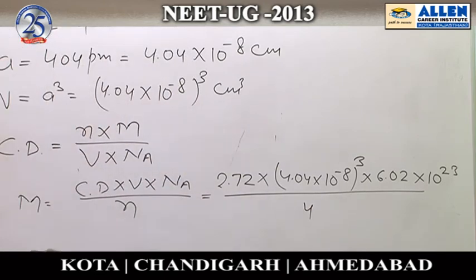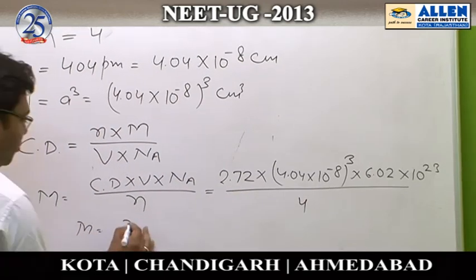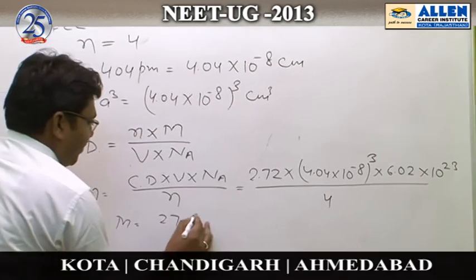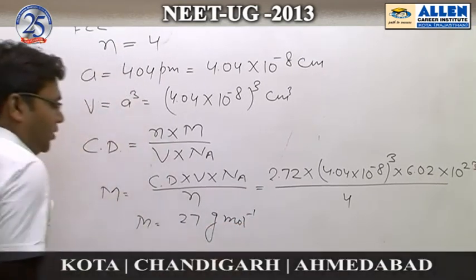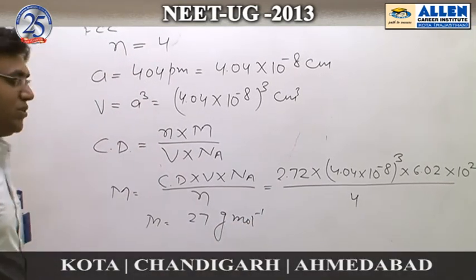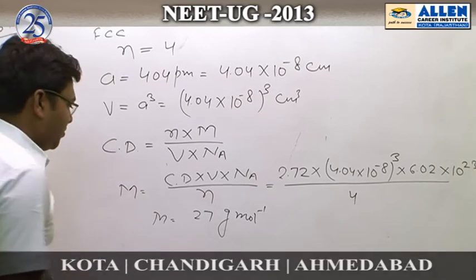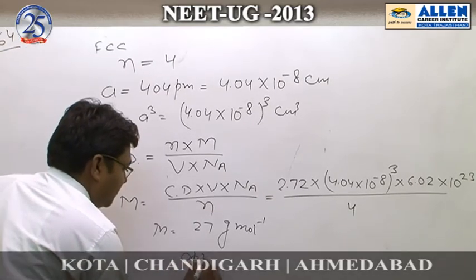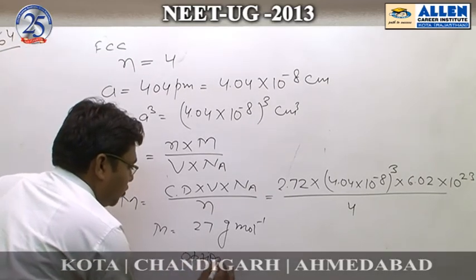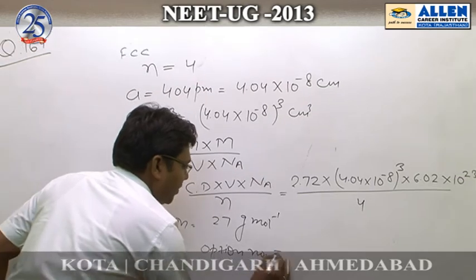The calculated molar mass is 27 grams per mole, which is the answer to this question.